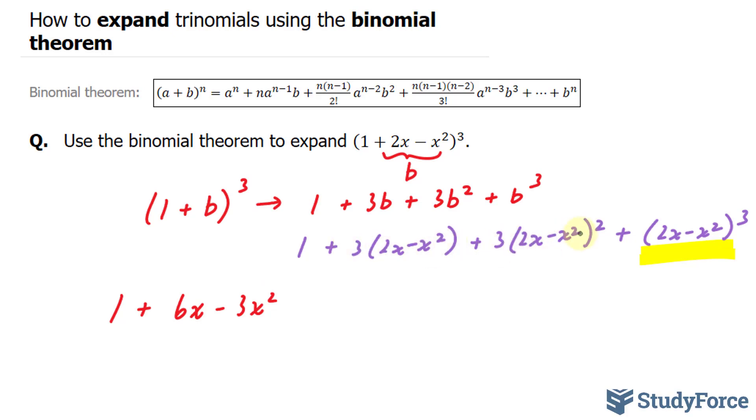We've just expanded this. Now we have to expand this. We have 3(2x - x²)(2x - x²). 3 times 2x is 6x minus 3x².